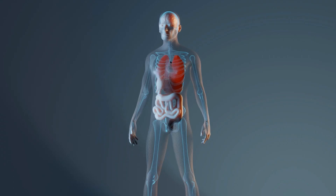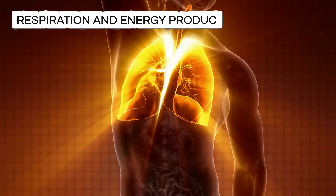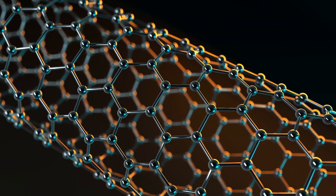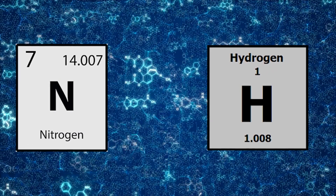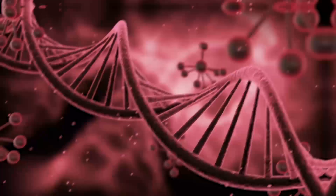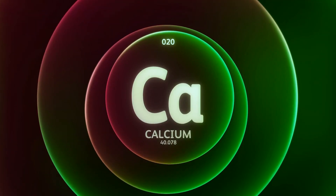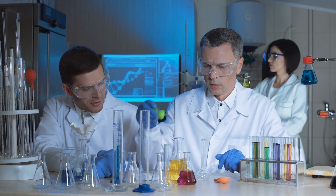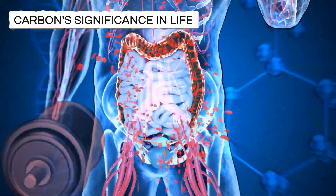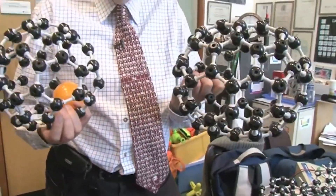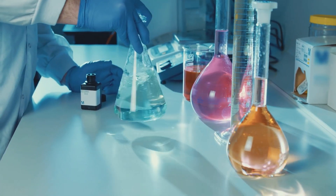Oxygen, the most abundant element in our bodies, plays a crucial role in respiration and energy production. Carbon, ranking second in abundance, forms the backbone of organic molecules and is the foundation of life's complex chemistry. Hydrogen and nitrogen, the third and fourth most abundant elements in our bodies, are essential components of numerous biological molecules such as DNA, proteins, and carbohydrates. Calcium, the fifth most abundant element, contributes to the structure and functioning of our bones. The correlation between the abundance of these elements in the universe and their presence in our bodies provides compelling evidence for carbon's significance in life. The abundance of carbon facilitates the formation and stability of diverse organic compounds, enabling the intricate chemistry required for life's processes.